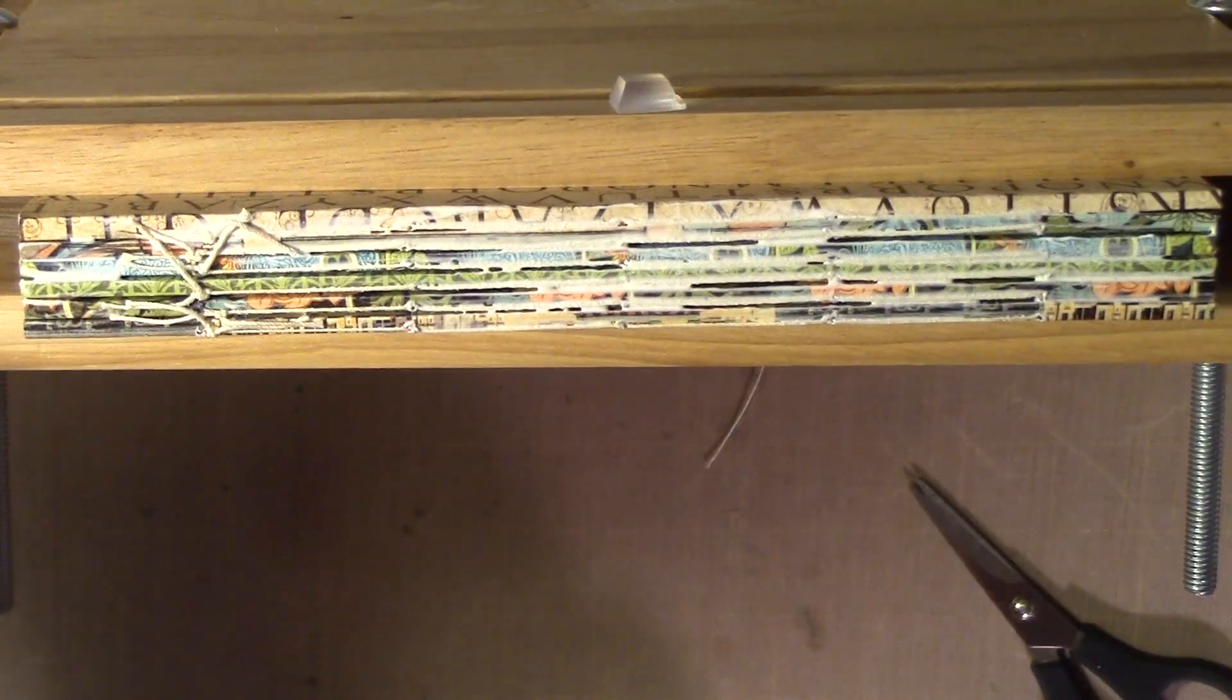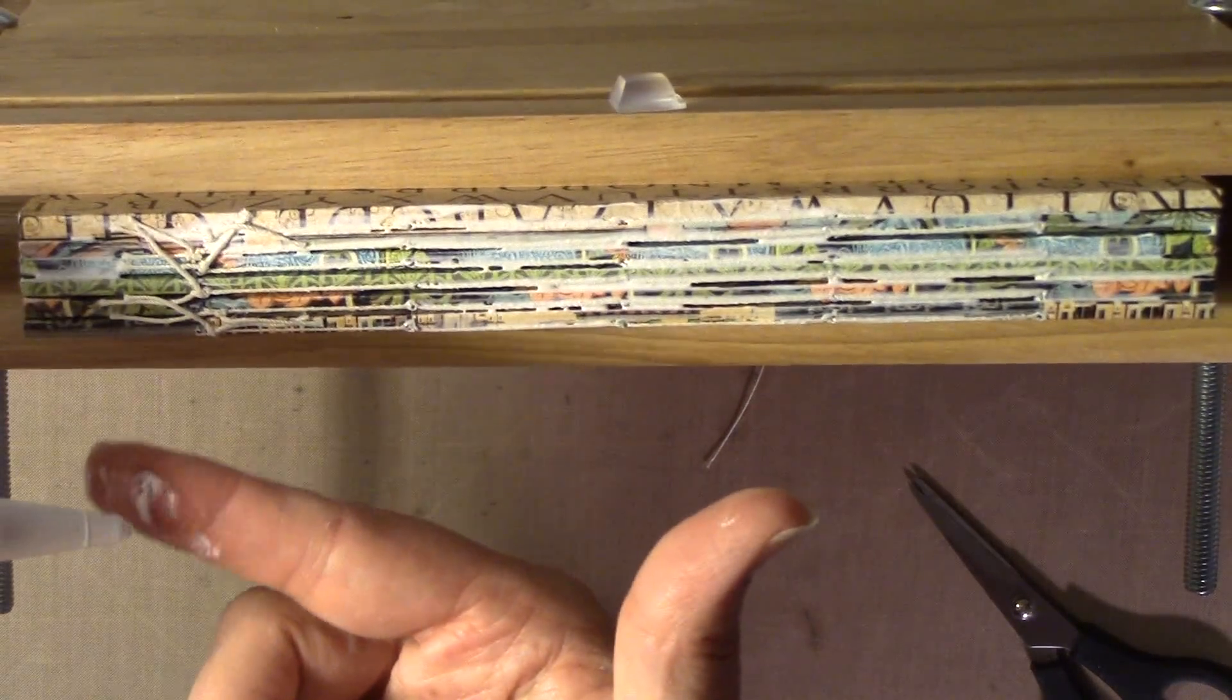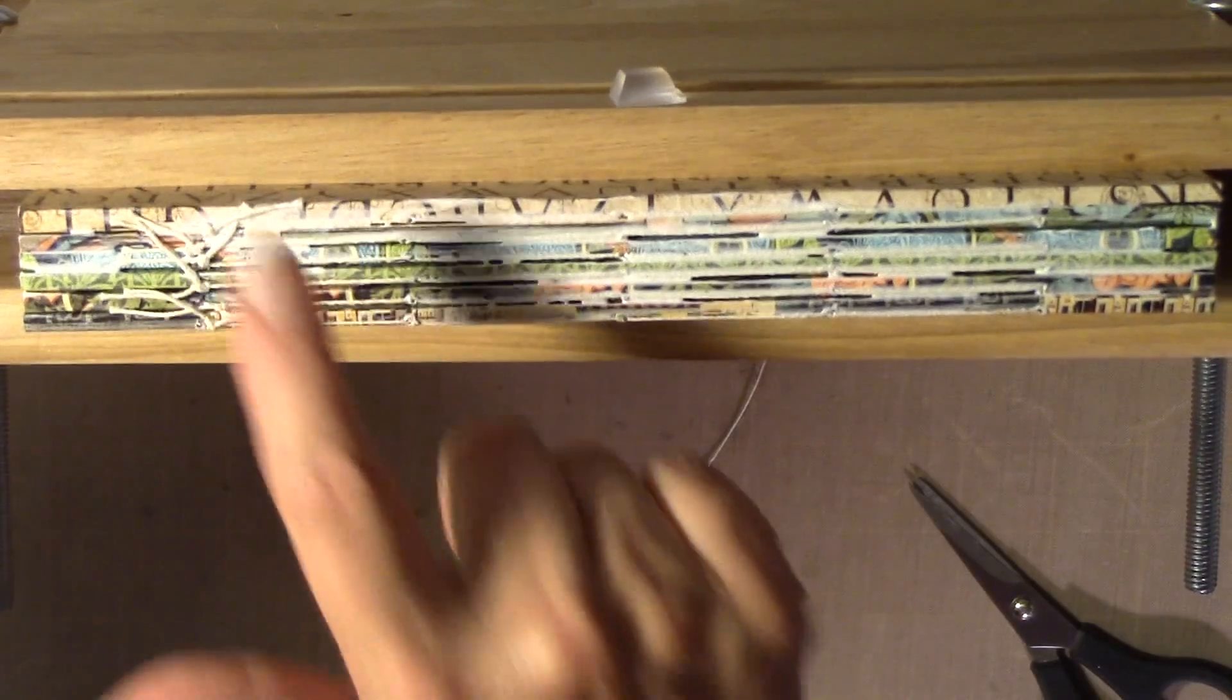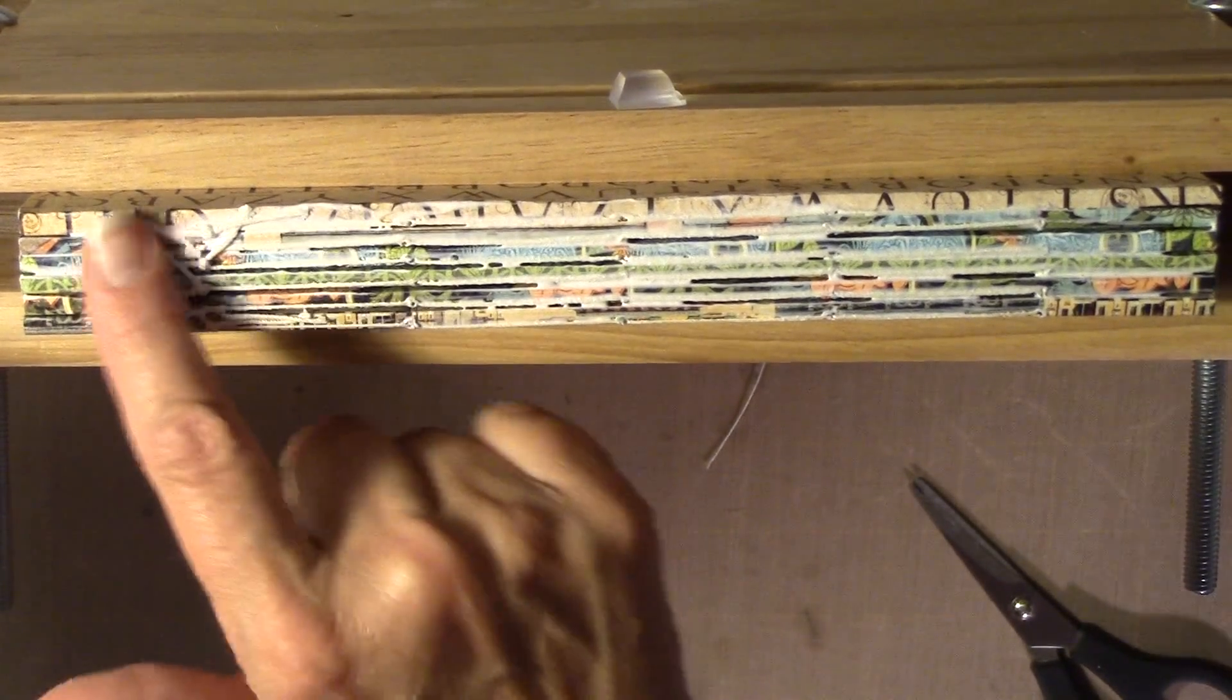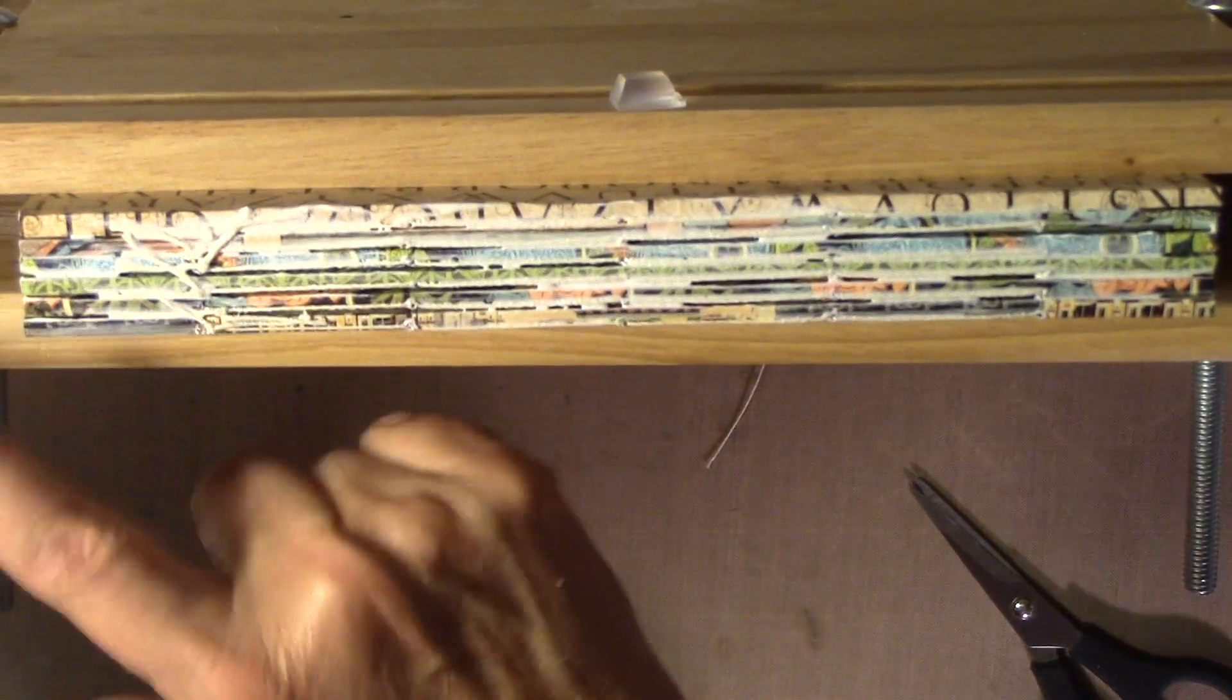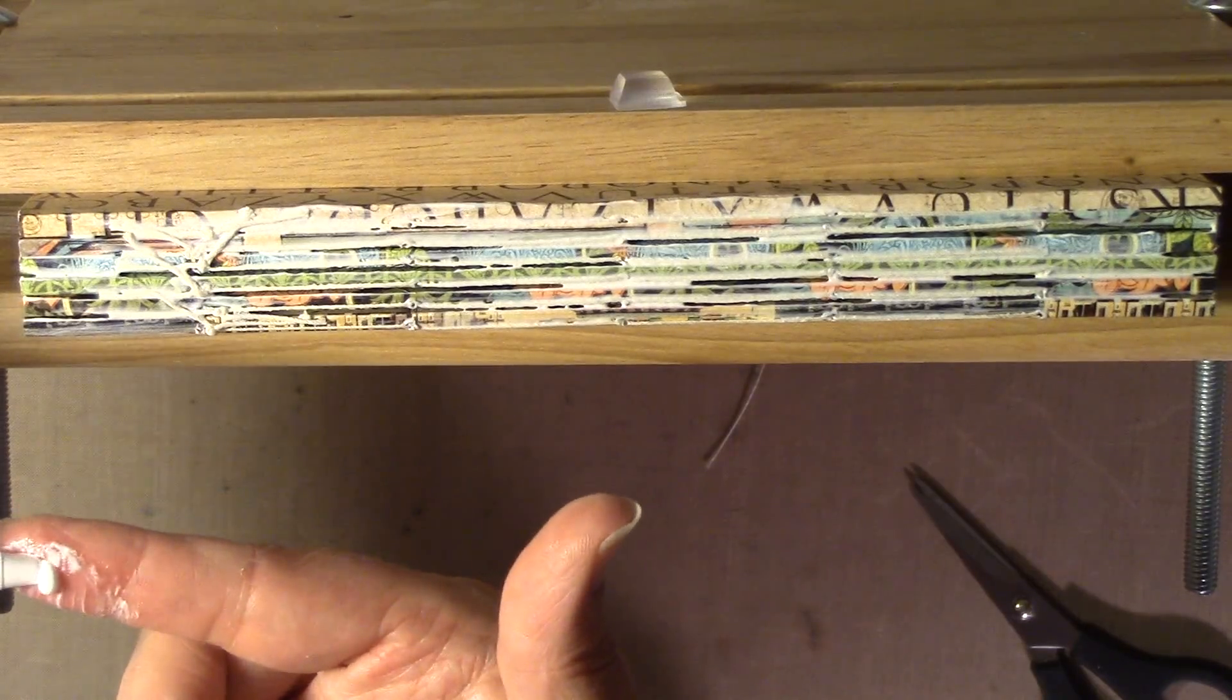And we don't want any glue to get on the sides, so you want to make sure you keep the sides clean of glue. But since I'm not sewing the signatures together like I did on the last book, I am going to use cheesecloth or ribbon or something like that to help secure this down.